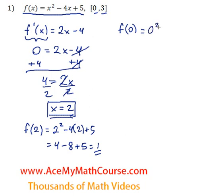0 squared minus 4 times 0 plus 5, we're just going to get 5.